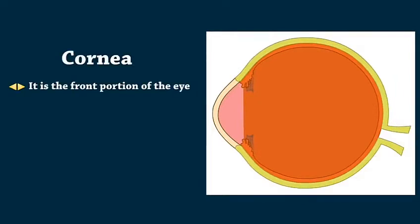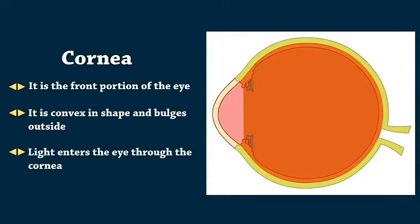Cornea is the front portion of the eye. It is convex in shape and bulges outside. Light enters the eye through the cornea.